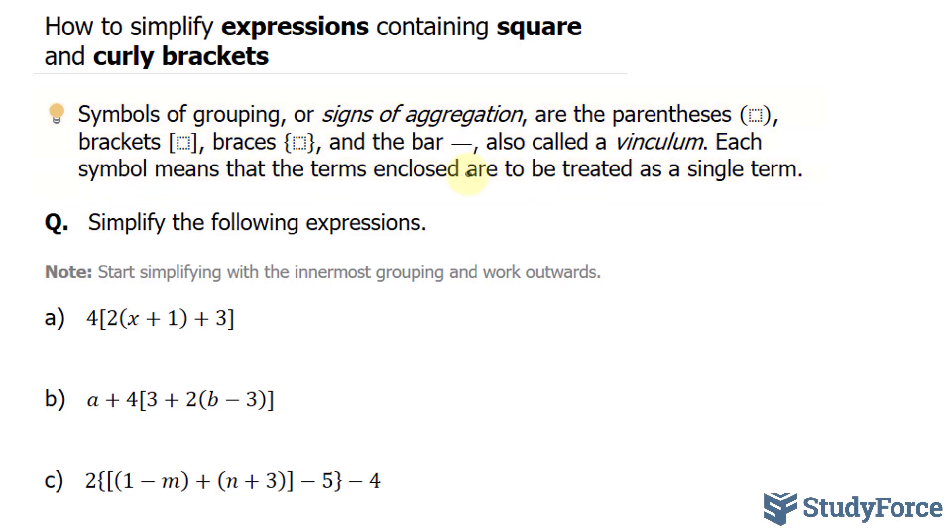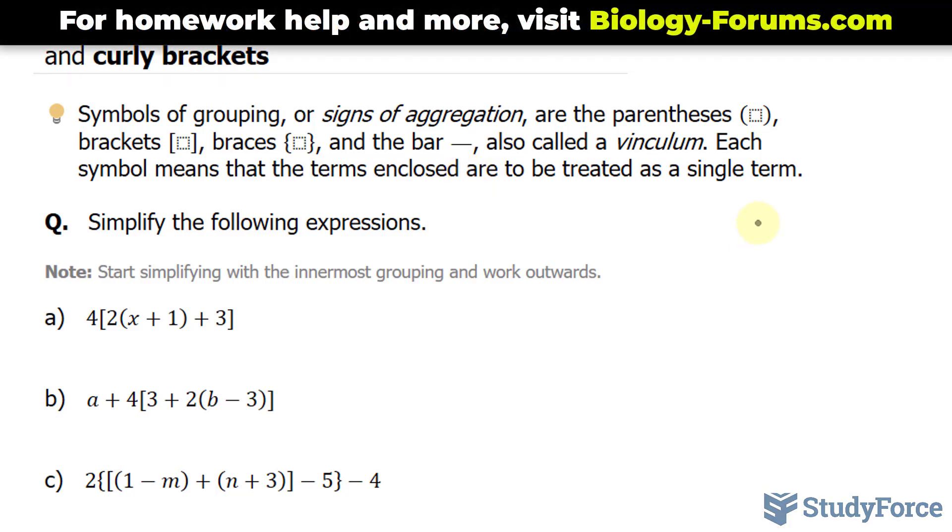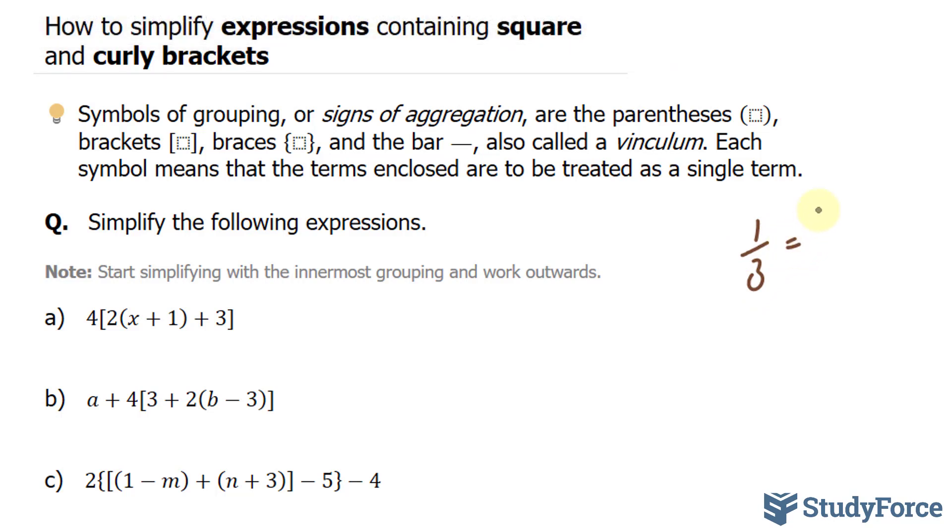known as the vinculum. You've likely seen this before when you evaluate a repeating fraction. Like 1 over 3, you end up with 0.333... and so on. Instead of writing all of that, you write 0.3 with a bar on top.